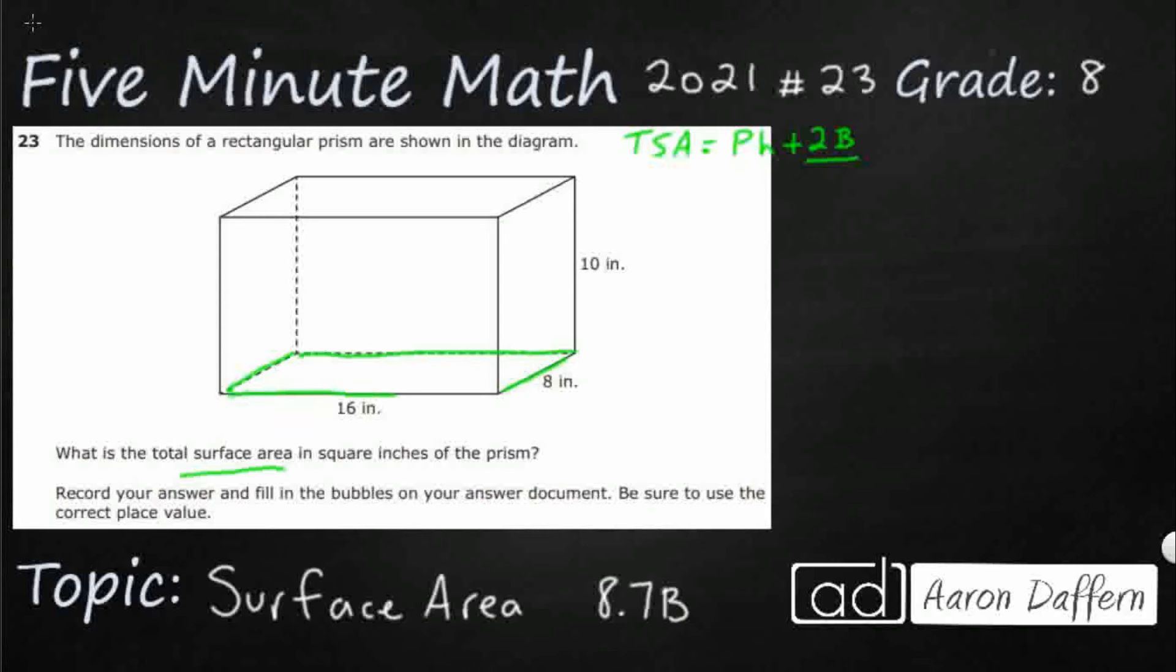So if I need the surface area of that base, I need to double it because it's the same on the top and the bottom. So the area of the base, 2B, is 16 times 8, and I'm just going to double it because there's two of them. So 16 times 8 is 128. Double that, I've got 256.